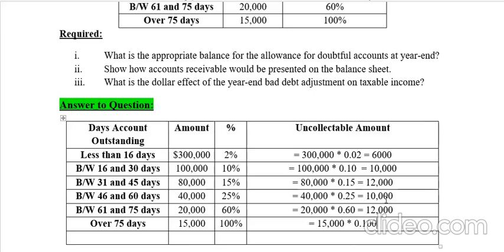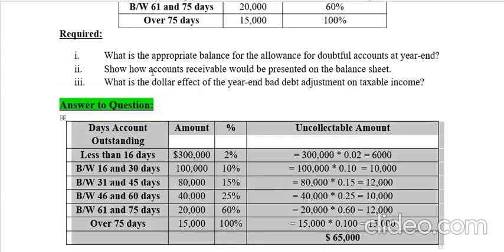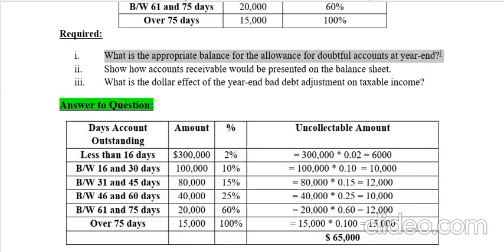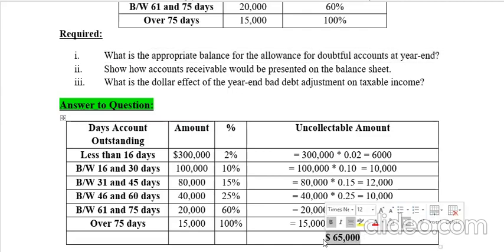Adding up: $6,000 plus $10,000 plus $12,000 plus $10,000 plus $12,000 plus $15,000 gives a total of $65,000. This $65,000 is our total uncollectable amount, and it becomes our new allowance for doubtful accounts. This table we just completed is the answer to part one — the appropriate balance of the allowance for doubtful accounts.